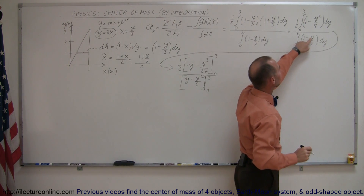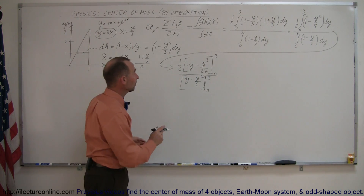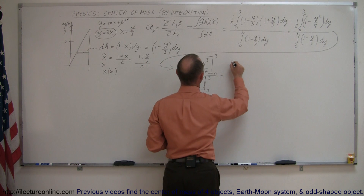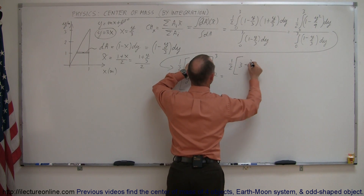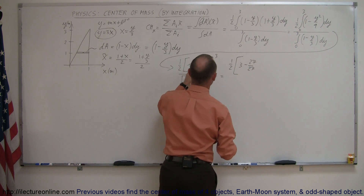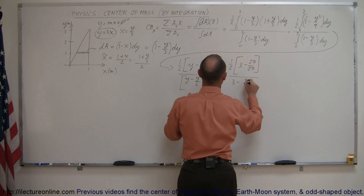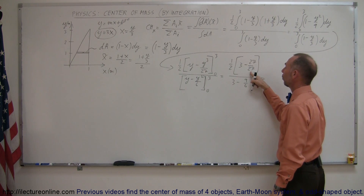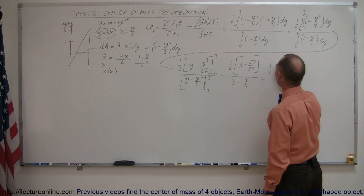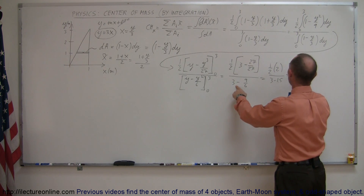I'll put brackets around it, also from 0 to 3. When you integrate that, you get y squared over 2, and 2 times 3 is 6. Now all we have to do is evaluate this. When we plug in the upper limit, we get 3 minus 3 cubed which is 27 over 27, and when we plug in the lower limit, you get 0, so you don't have to worry about that. Divide this by 3 minus 9 over 6. Simplifying: 27 over 27 is 1, 3 minus 1 is 2, so we get 1 half times 2 in the numerator divided by 3 minus 1.5. So this is 1 divided by 1.5, which is 2 thirds.